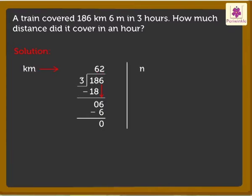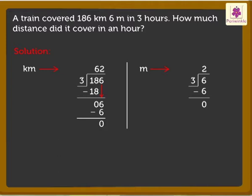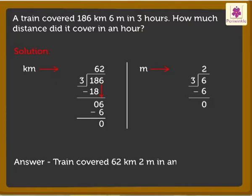Now let's divide the meters, that is 6. As we know, 2 times 3 is equal to 6. Therefore, we write 2 as the quotient and 6 below the dividend. On subtracting, we get the final remainder as 0. Look, we found the quotient — that is 2 meters. The quotient is 62 kilometers 2 meters. Thus, the train covered 62 kilometers 2 meters in an hour.